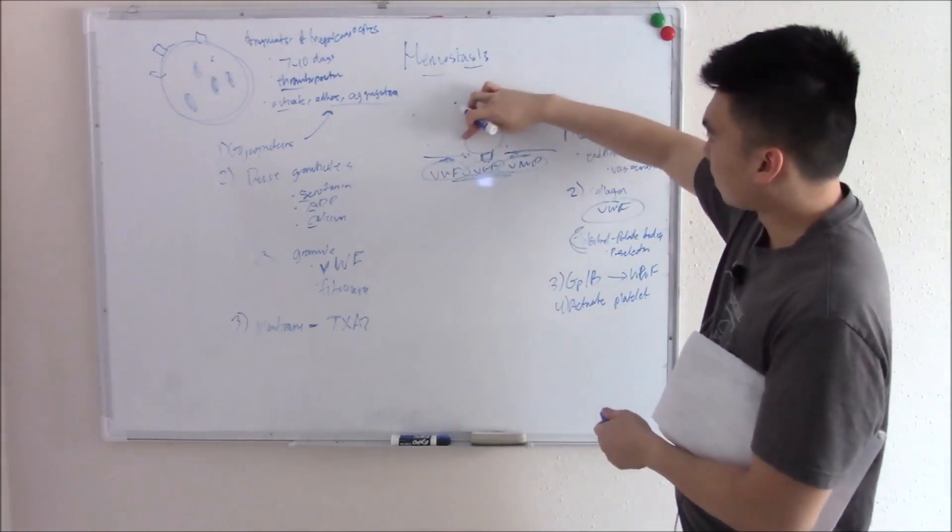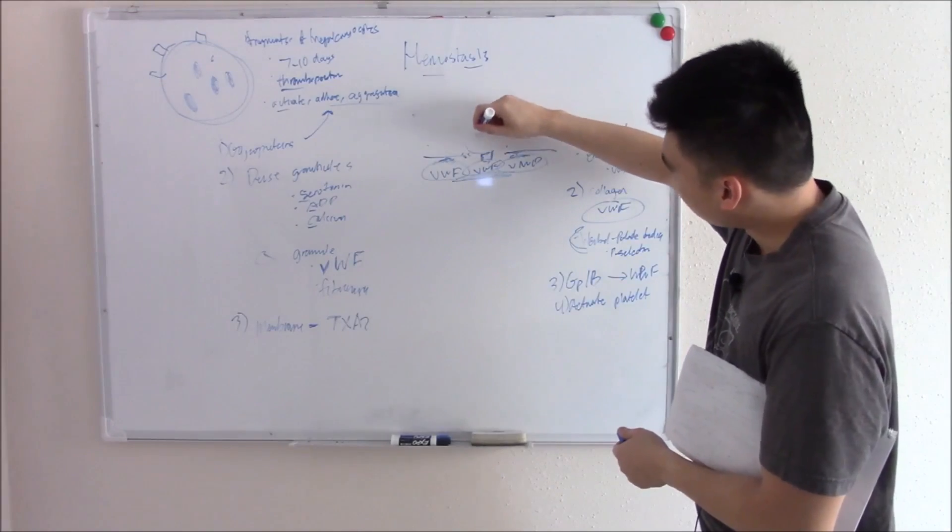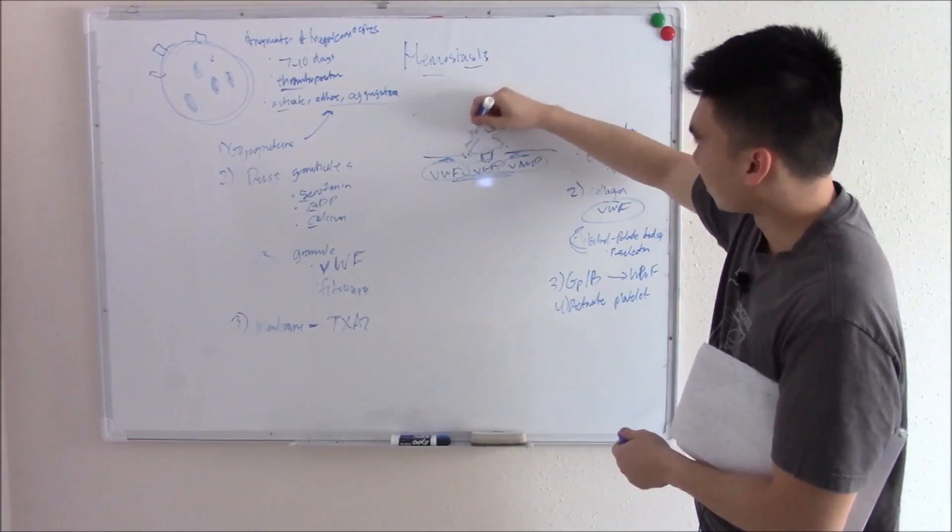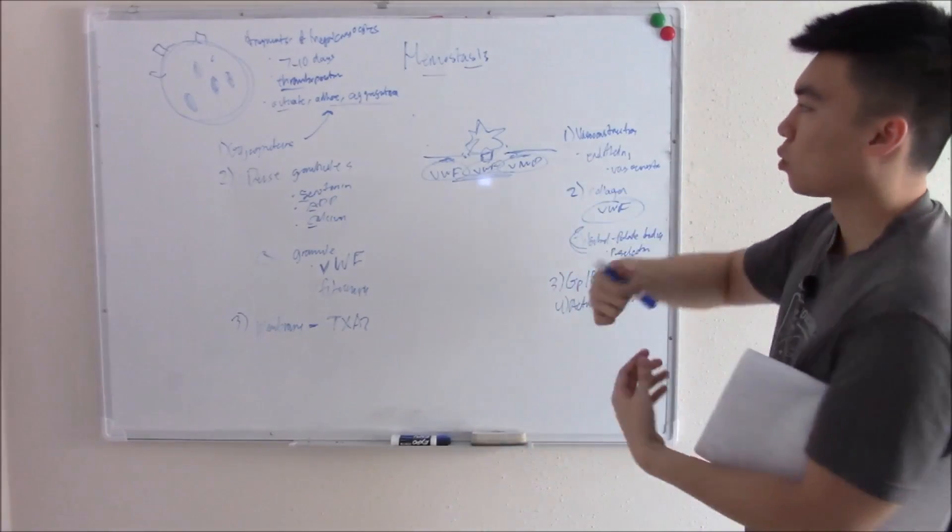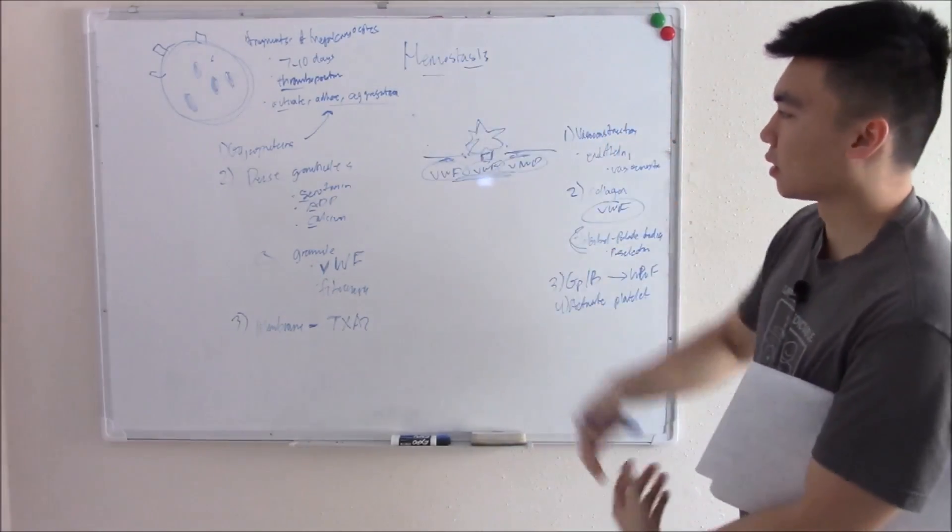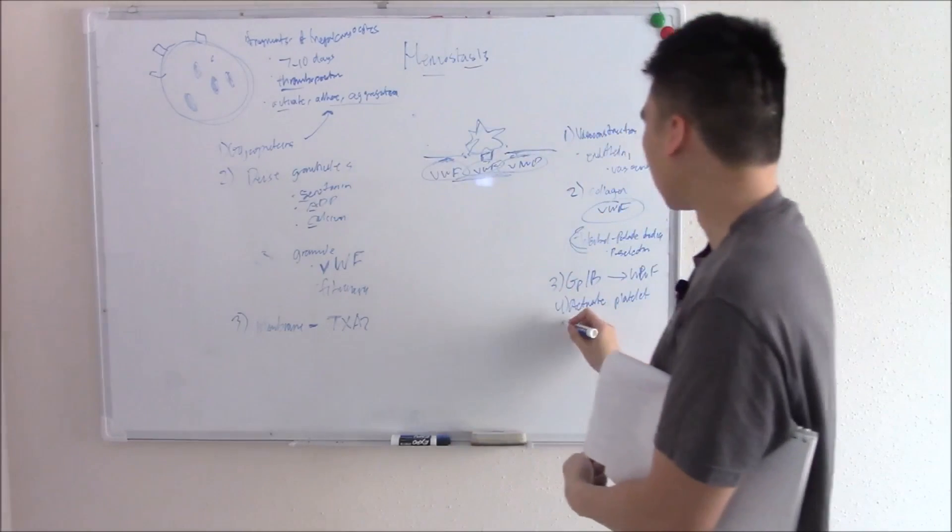When it activates the platelet, it becomes a star shape, goes from a sphere to kind of a star shape. The star shape helps it stack and stick together. When it turns into a star shape, it releases all its granules.